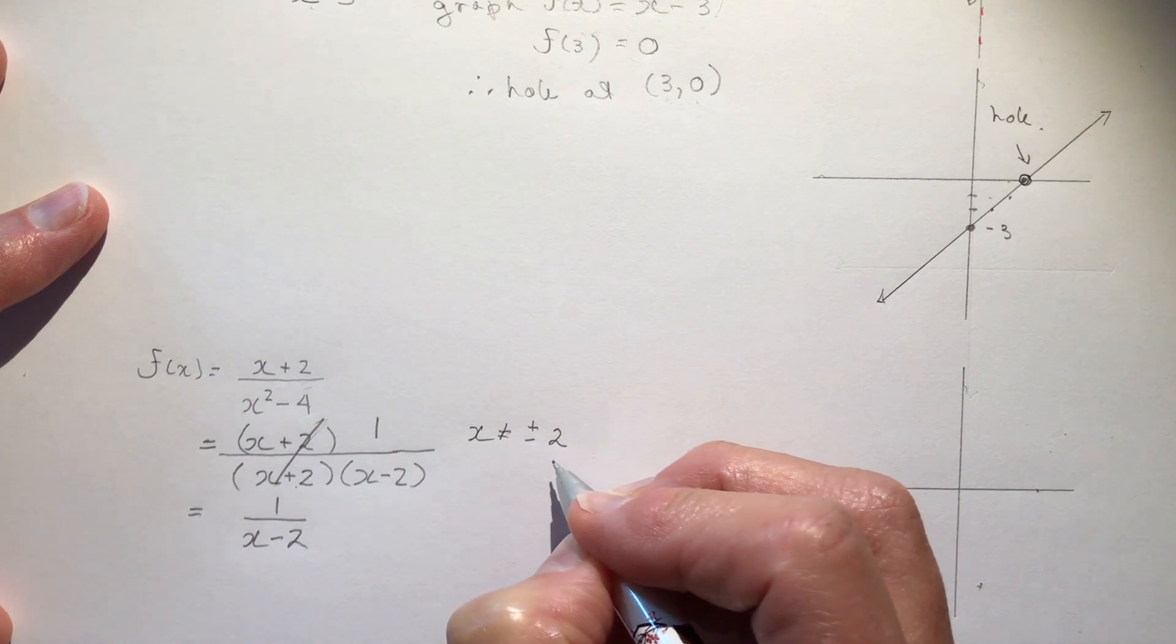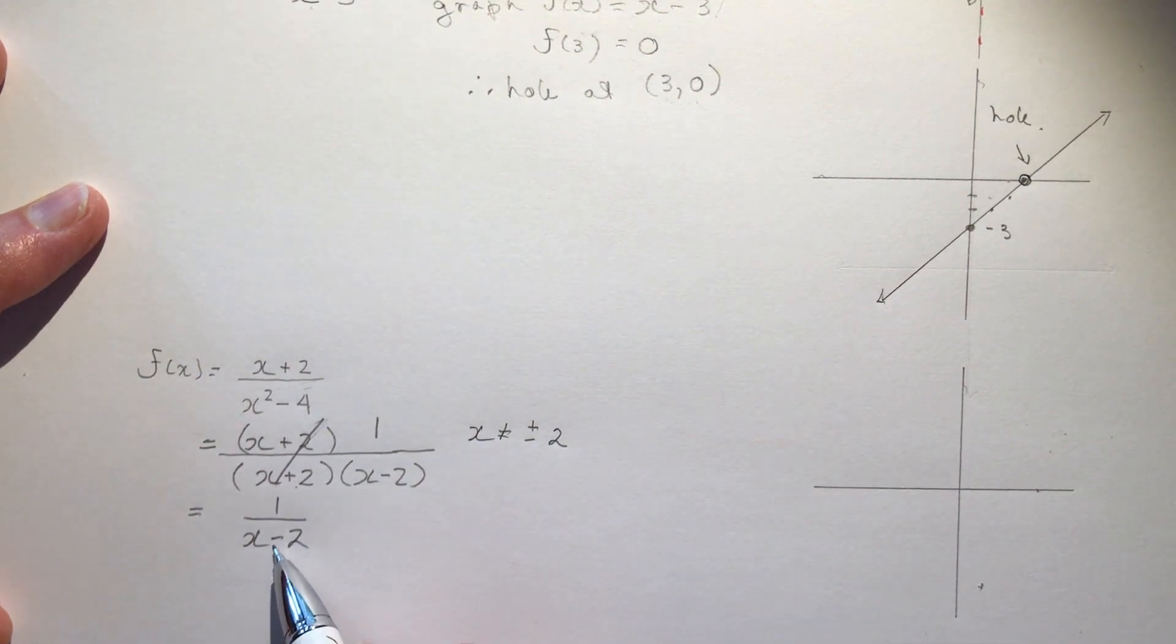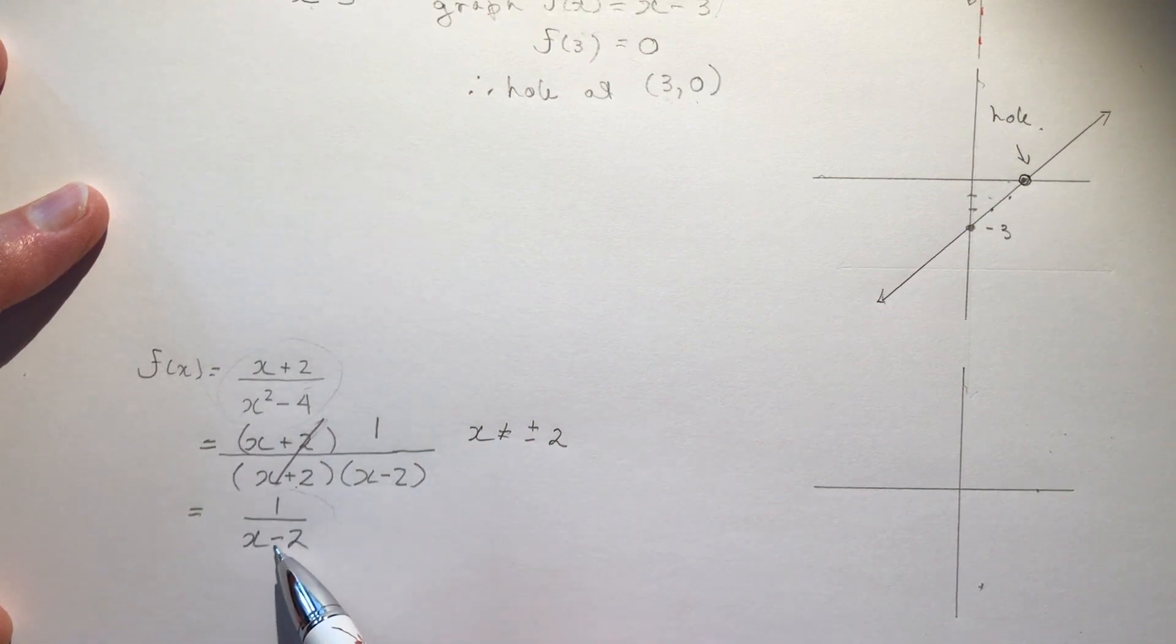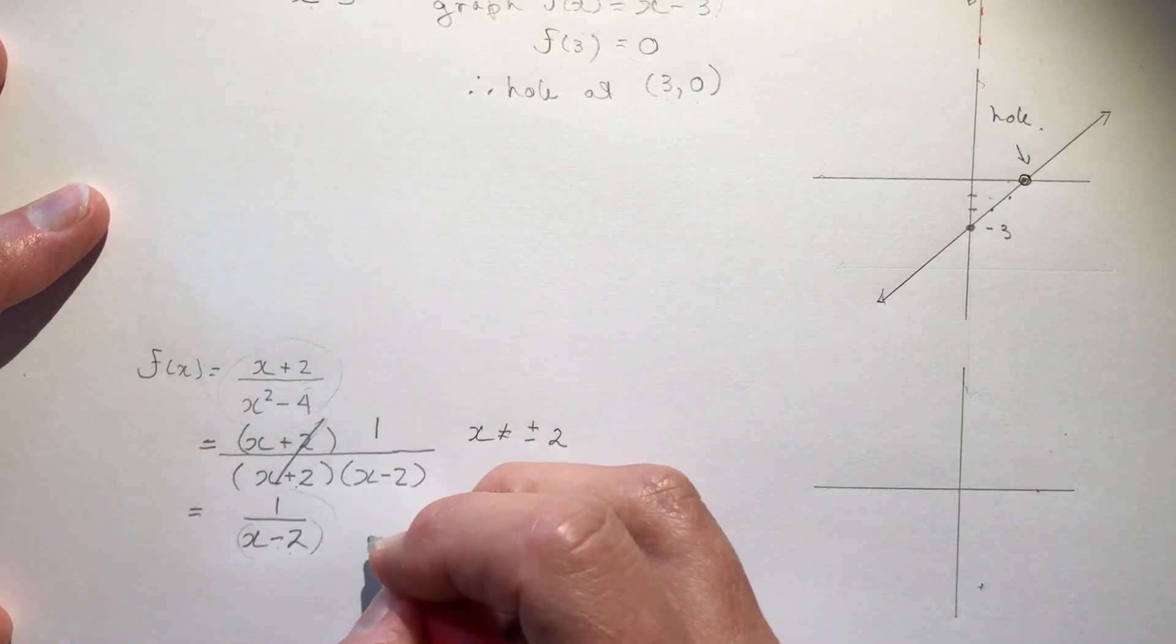The restriction was x cannot be equal to plus or minus 2, right. It can't be plus or minus 2.